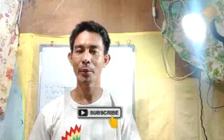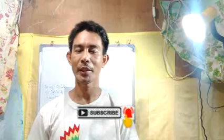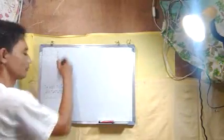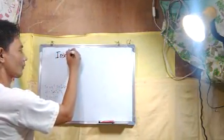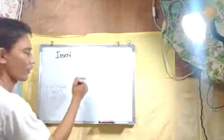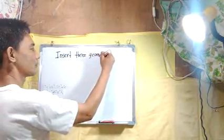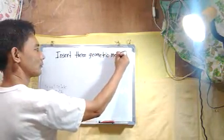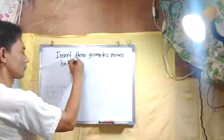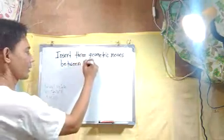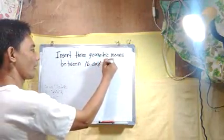For today's problem, we are going to find the geometric means between two non-consecutive terms. Our example is: insert three geometric means between 16 and 81.